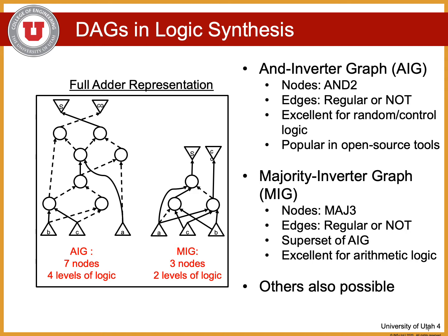AIGs are a good all-around choice and are excellent for random and control logic. Majority inverter graphs, or MIGs, are a recent innovation which use the majority of 3 function for each node, and edges again regular or inverted. MIGs are a superset of AIGs, meaning that AIG logic can be implemented in MIGs by adding a constant. MIGs are excellent for arithmetic logic because the majority function efficiently represents the carry-out. For example, a full adder represented using AIGs requires seven nodes and four levels of logic depth, whereas in MIGs it requires only three nodes and two levels of logic depth — a clear advantage for optimizing arithmetic logic.